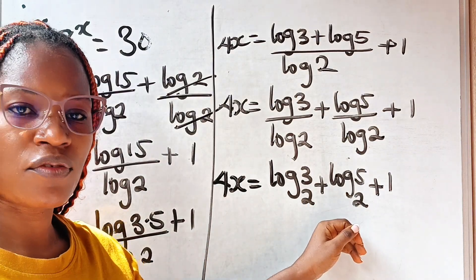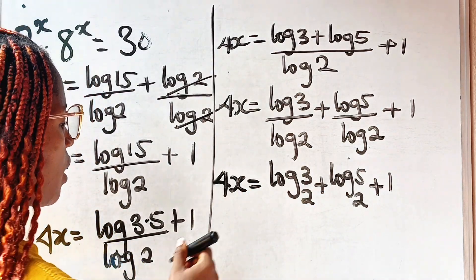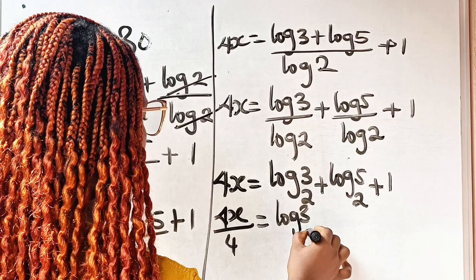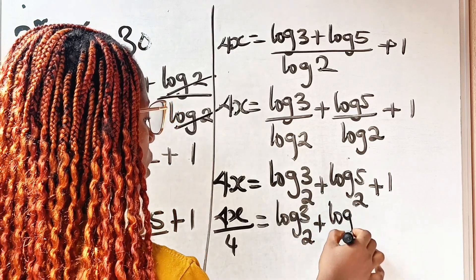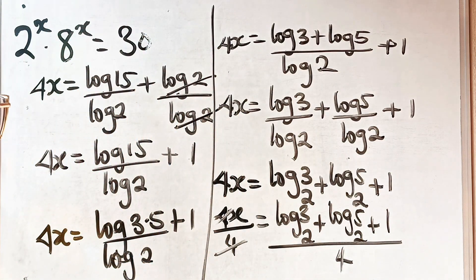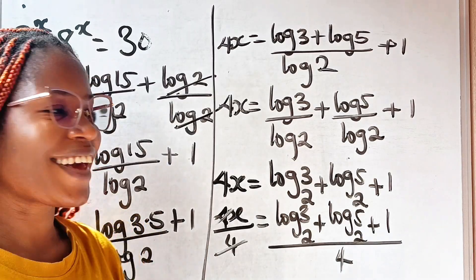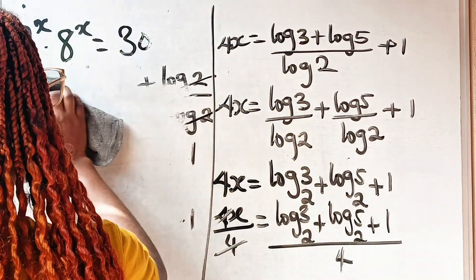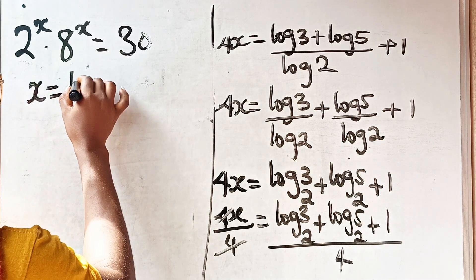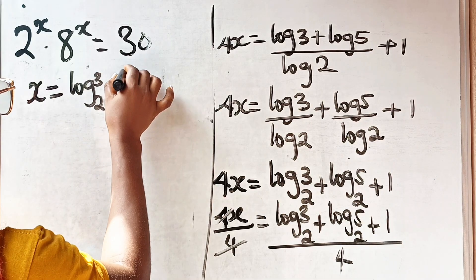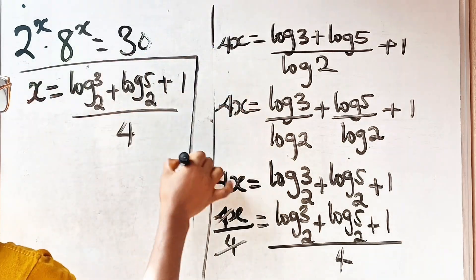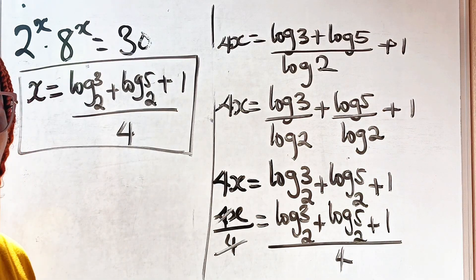Now dividing both sides by 4, we have 4x divided by 4 equals log 3 base 2, plus log 5 base 2, plus 1, everything divided by 4. The 4 cancels on the left, so x equals log 3 base 2, plus log 5 base 2, plus 1, all divided by 4. It is now time to prove that this is indeed the correct value of x.